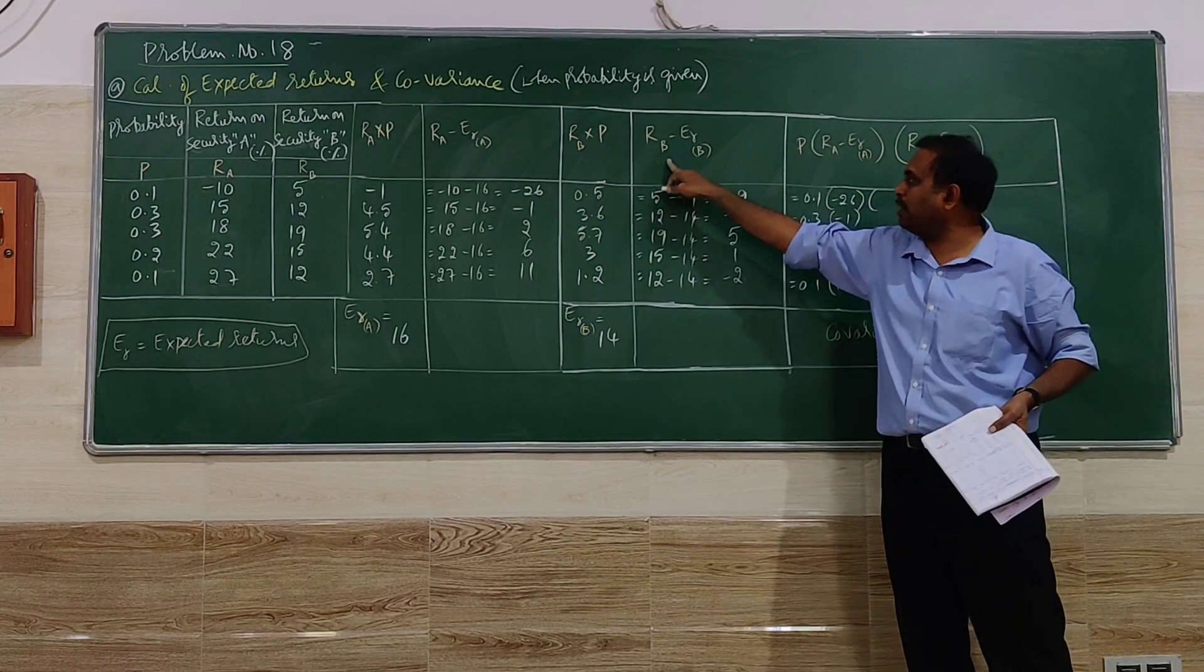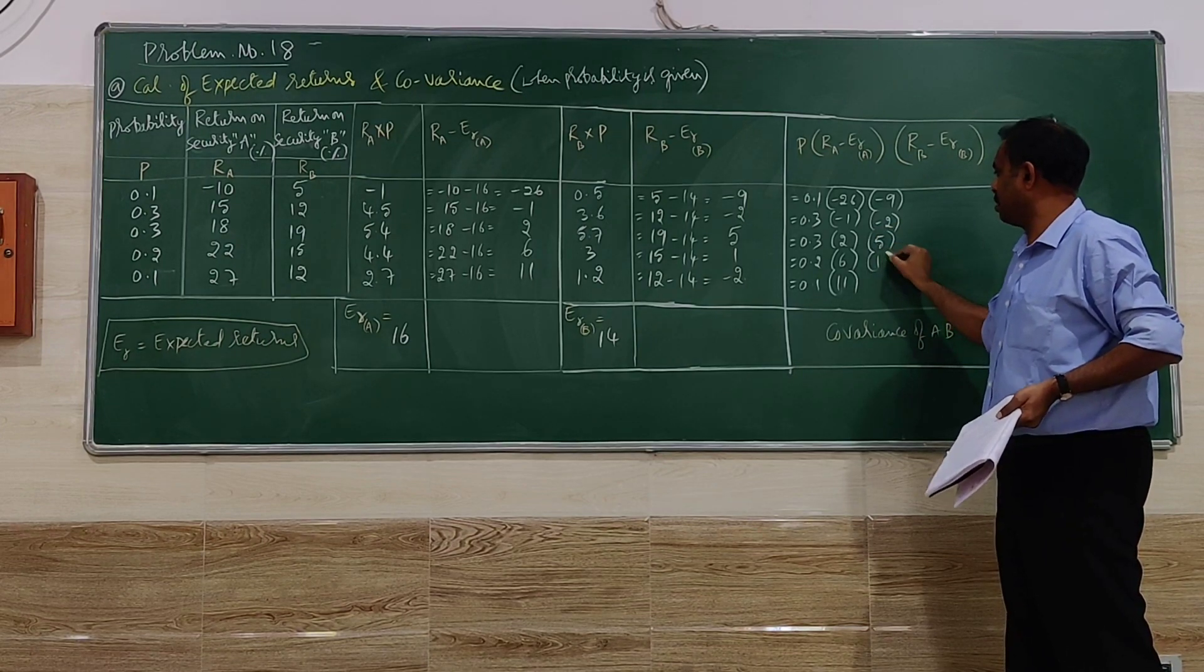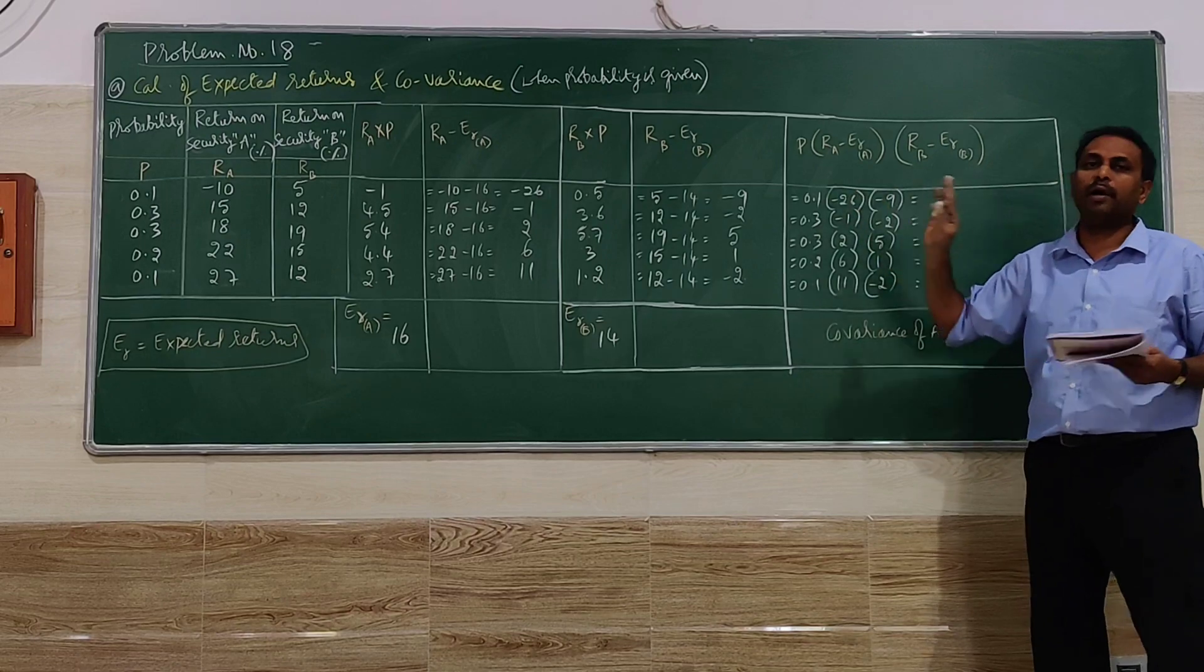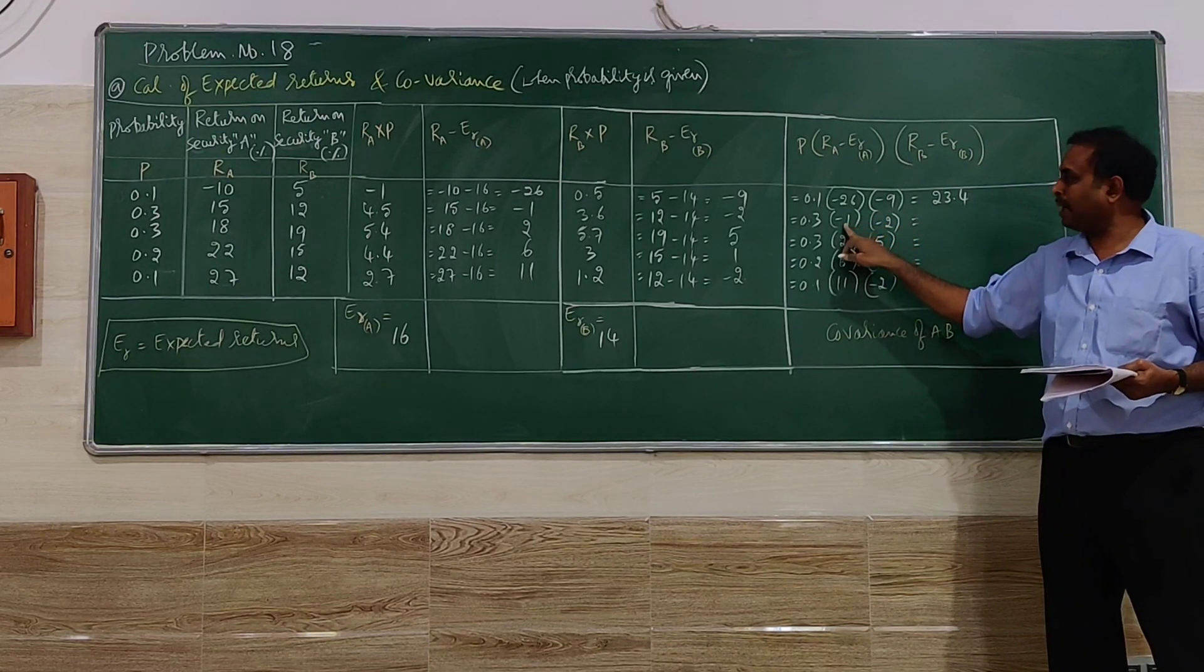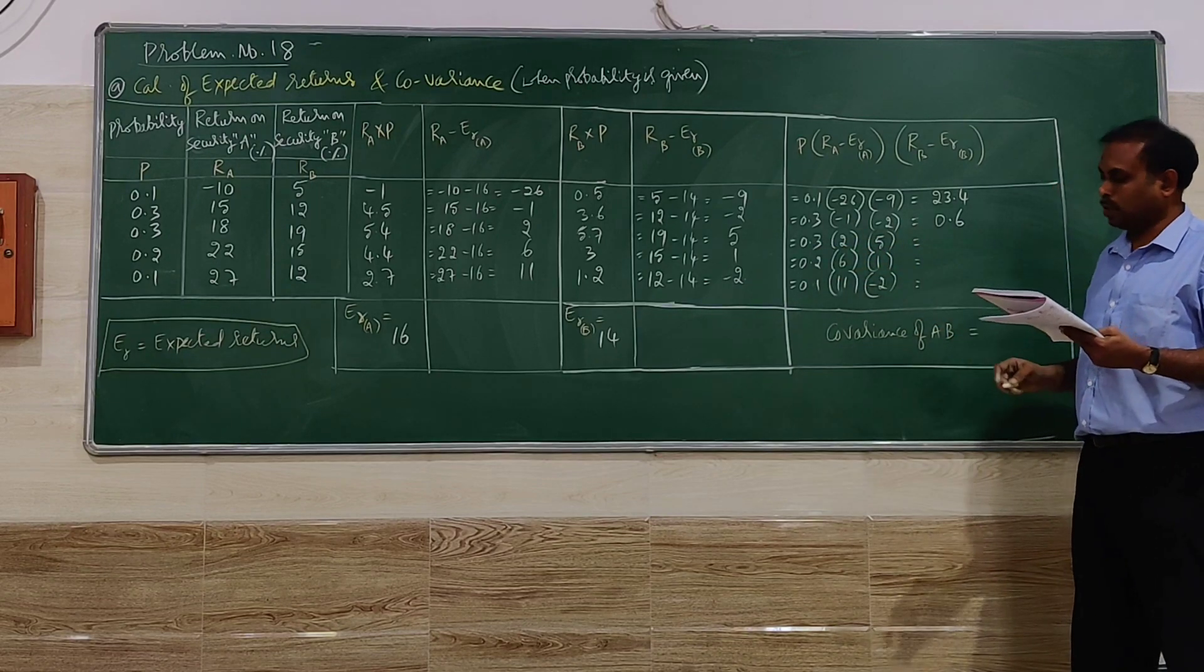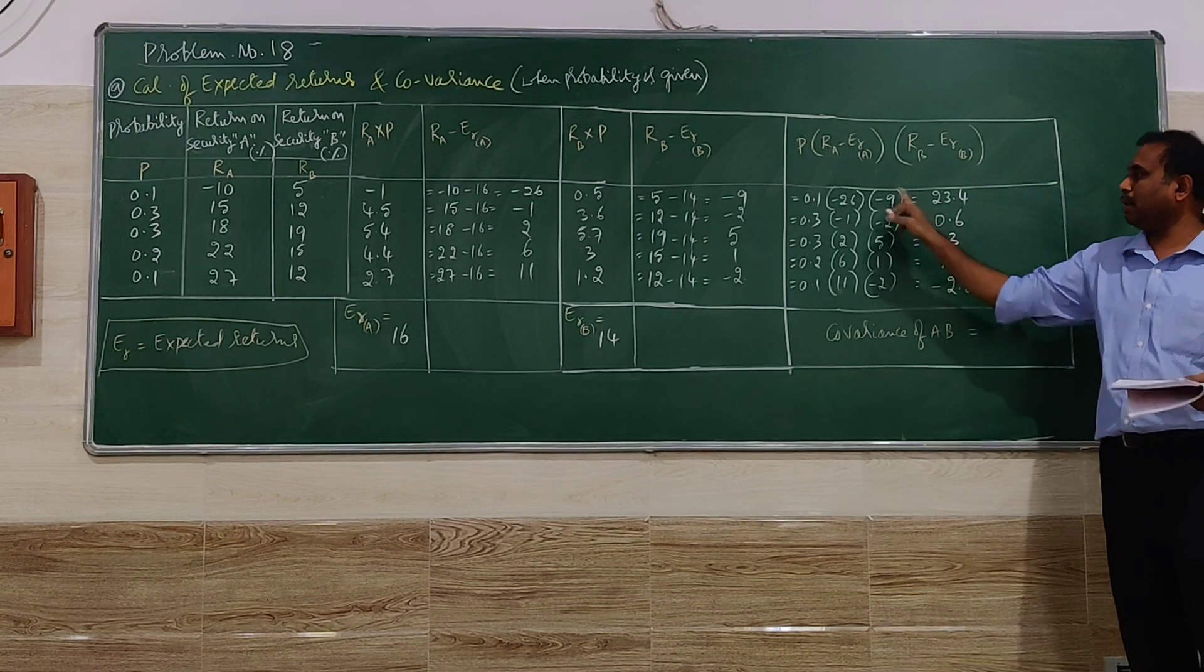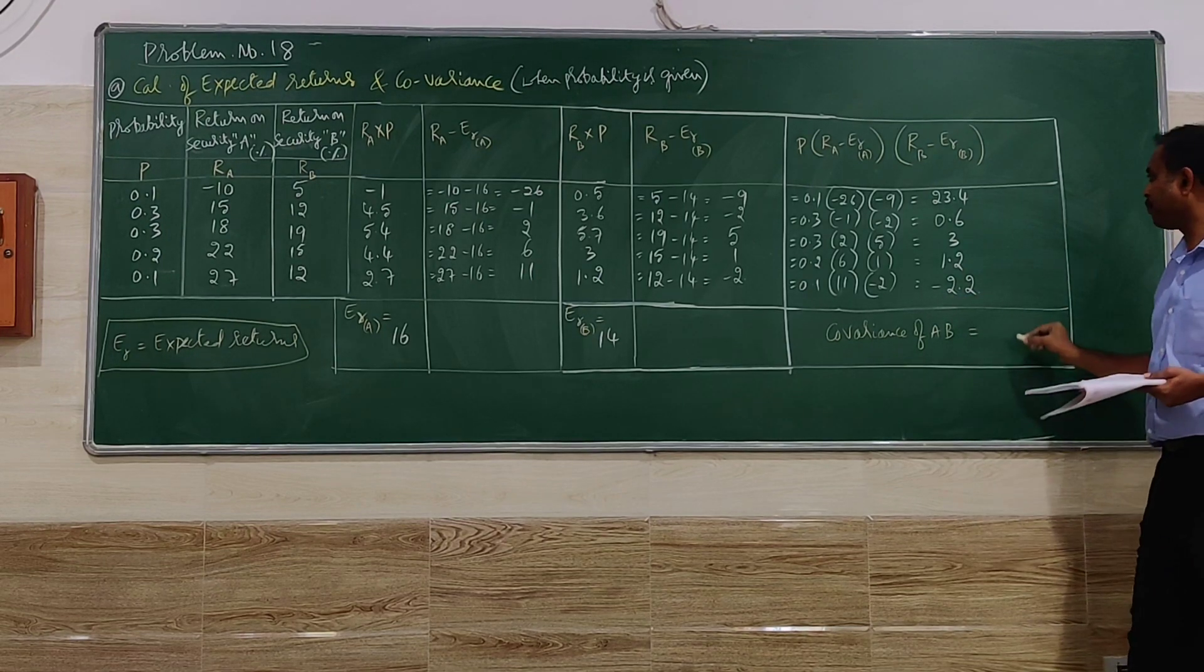Next, again multiplication of RB minus E(RB). There is a deviation we call it as. Here once again we have to be more careful. We have to multiply all these values. Minus 9 into minus 26 into 0.1, so that is going to be 23.4. Similarly, minus 2 into minus 1 into 0.3 is 0.6. Similarly, 5 into 2 into 0.3 is 3. Next, 1.2. Next, minus 2.2. So here minus and minus becomes plus. If only one minus is there, so it is minus 2.2. Add all the plus values and minus 2.2.